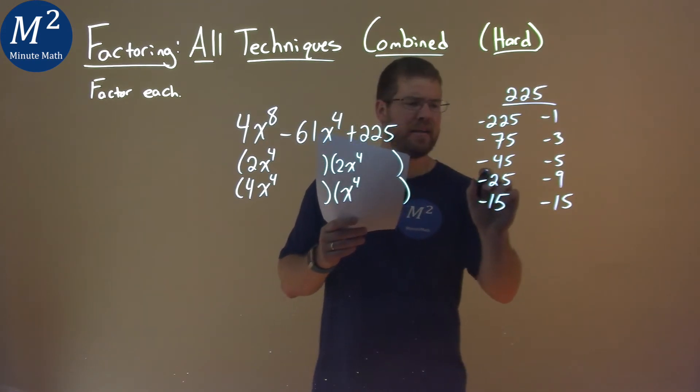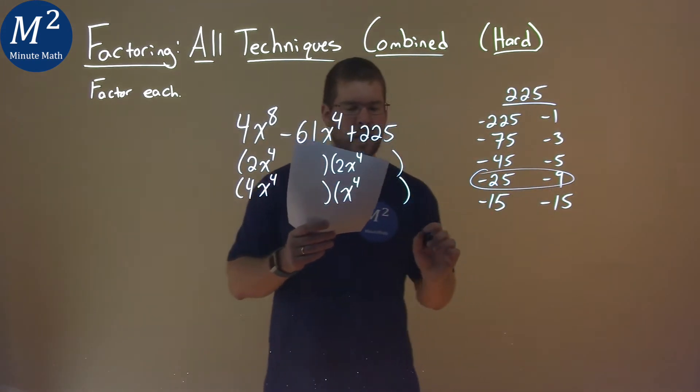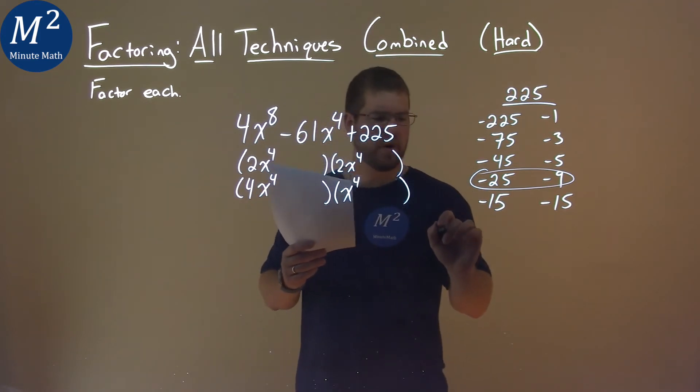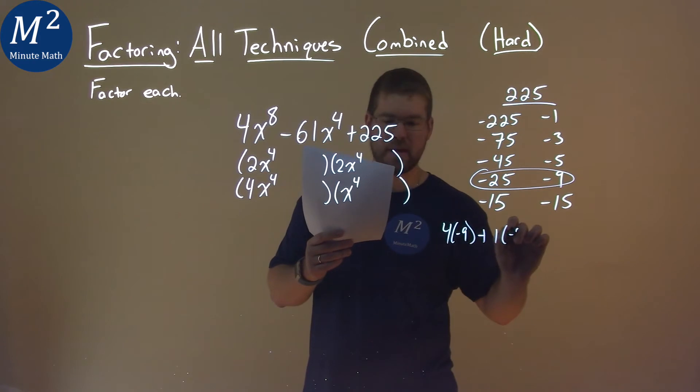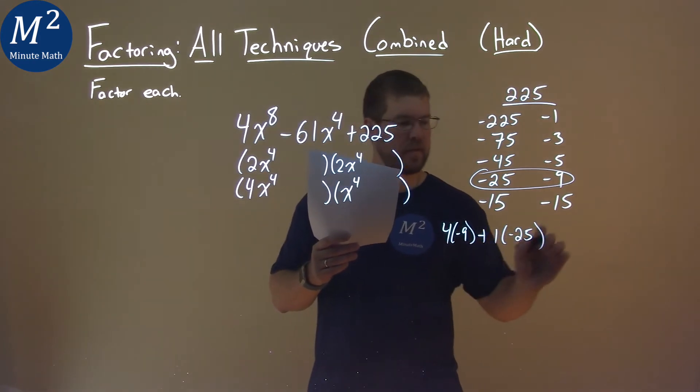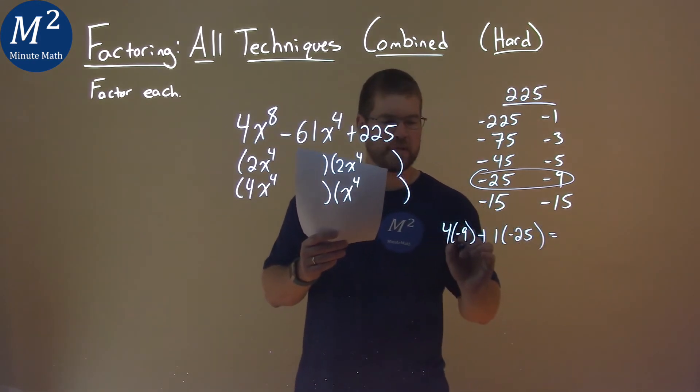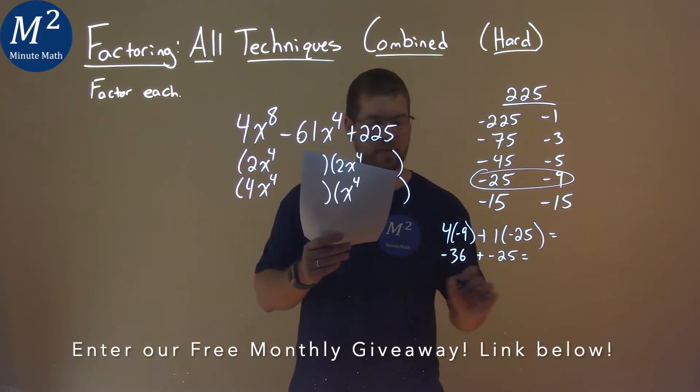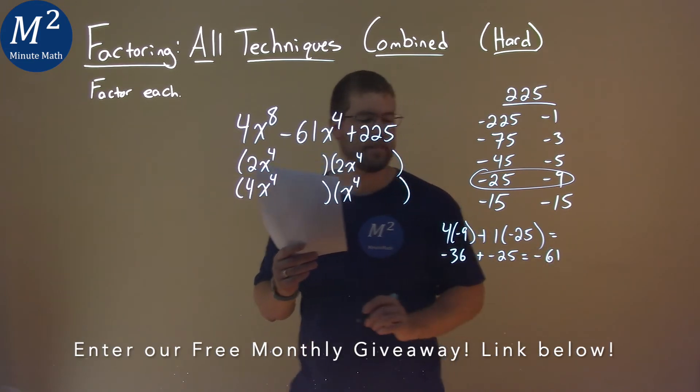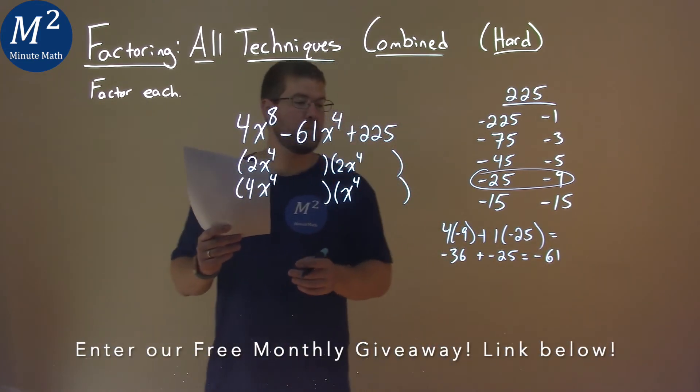Negative 25 and 9 is what we're looking for here. How so? 4 times a negative 9 plus 1 times a negative 25. What does that equal? Well, 4 times negative 9 is a negative 36, and we have plus a negative 25. Combine that, we get a negative 61. So these are the numbers that we're looking for.